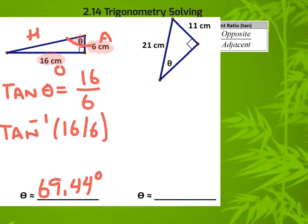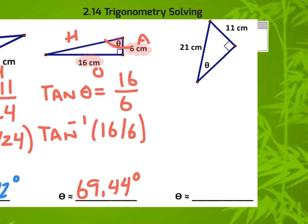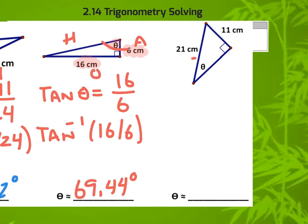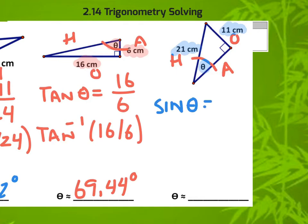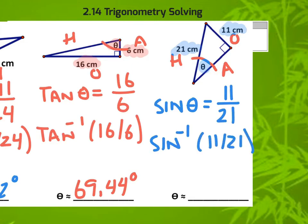One more example of how to find an angle — these all work the same way, and you see a pattern. I'm going to use the 11 and the 21, and I'm finding my angle. This is the first time we're using sine. The sine of an angle is its opposite over its hypotenuse. We hit second sine to obtain the inverse function, and when we take the inverse of that, we get 31.59 degrees. This is how you solve for an angle, and they all work the same way.